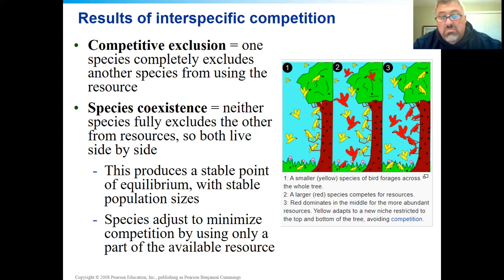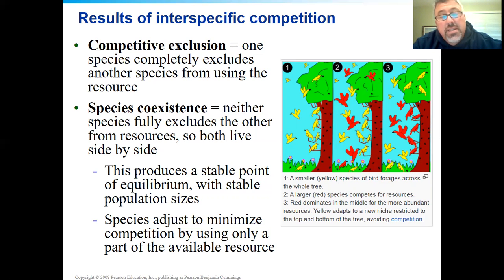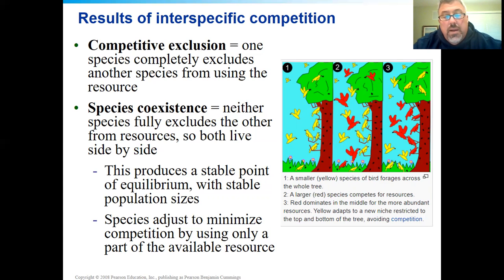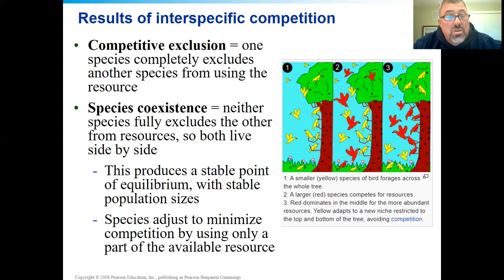Coexistence is what most organisms do — they find a way to utilize resources together. They live side by side and exist at an equilibrium decided by all of them together. One area could be slightly different than another just due to certain nuances of available resources. Coexistence is really what we want to see — everybody gets what they need to live.